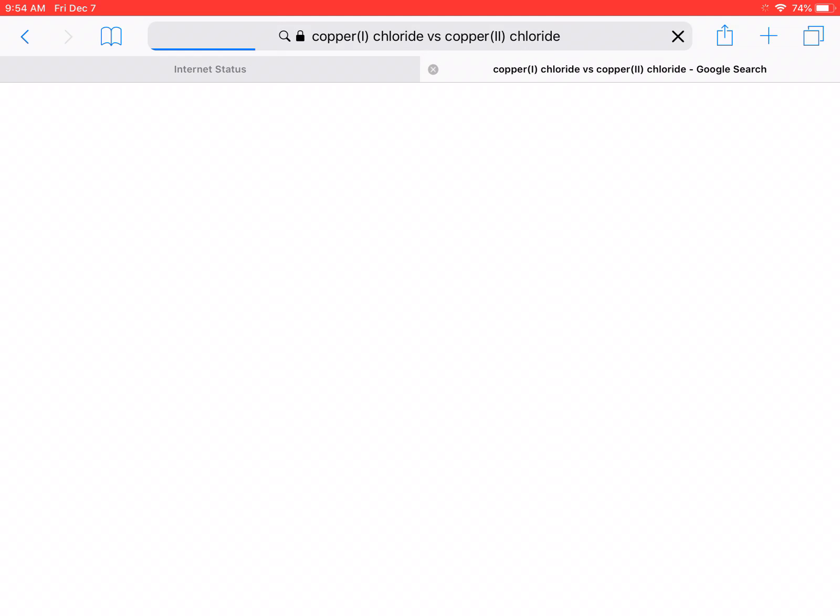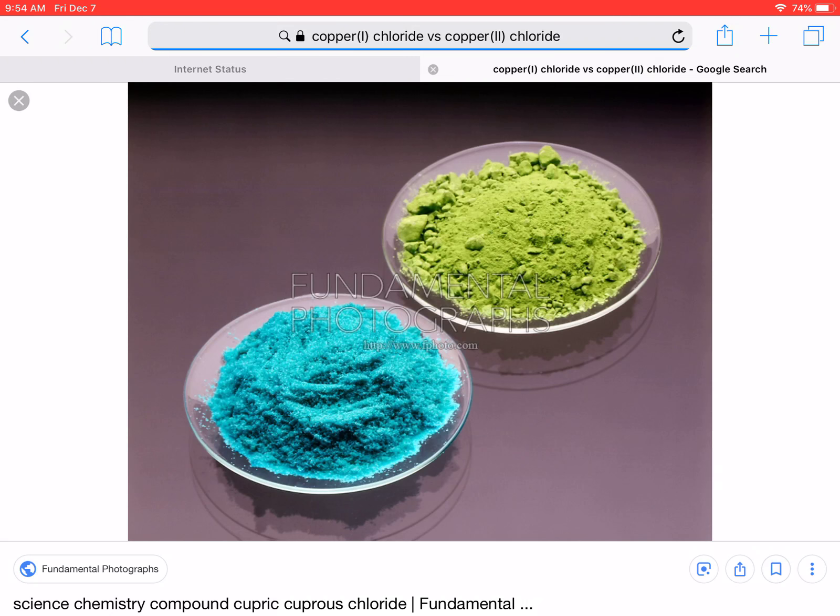So copper can bond to chlorine in different ways. You might remember during the flame test lab, this teal chemical on the bottom here. That was at one of our stations. It's like that teal crystal. That's copper 2 chloride. So that means that the copper lost 2 electrons and then bonded to chlorine.